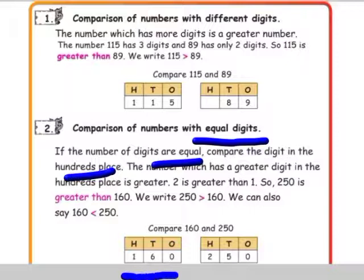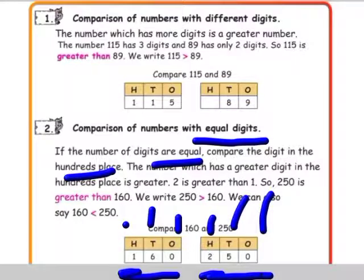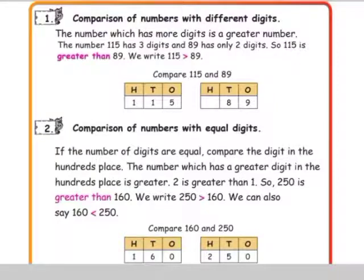The given numbers are 3-digit numbers: 160 and 250. We have to look at the hundreds place. In 160, the hundreds digit is 1. In 250, the hundreds digit is 2. Since 2 is greater than 1, 250 is the greater number and 160 is the smaller number. So 160 is less than 250.